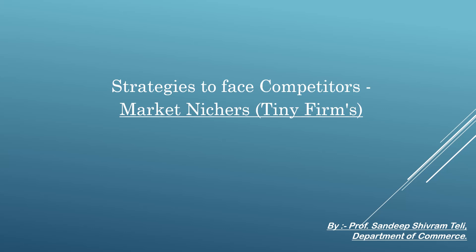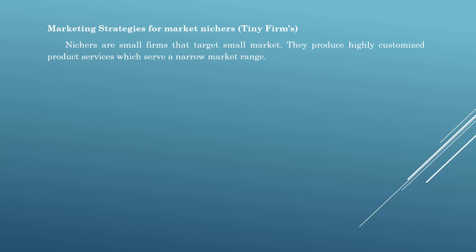Welcome and good morning. Our next point of marketing commerce paper fifth is strategies to face competitors — market niches. Niches means tiny firms' marketing strategies for market niches. Niches are small firms that target small markets. They produce highly customized products or services, serving a narrow market range. Though the value is less, the profit margin is high.